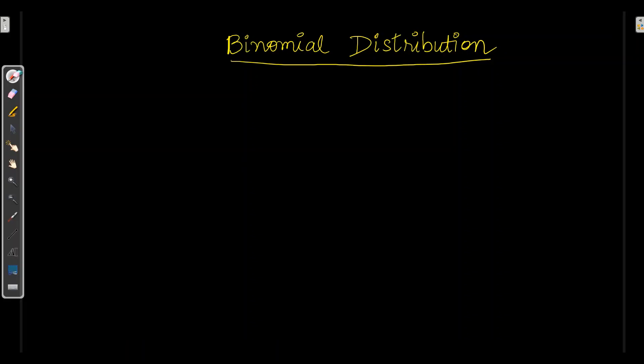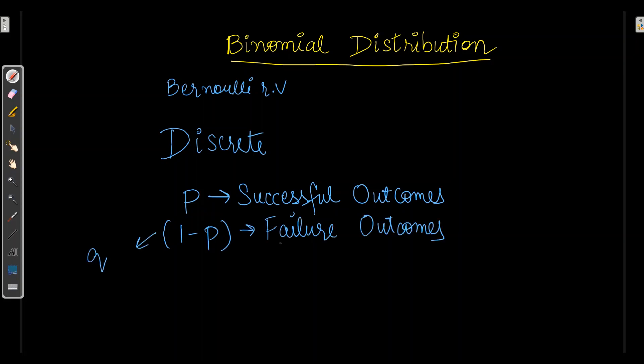Binomial random variable is related to Bernoulli random variable. It is a discrete random variable that counts how many times a particular event occurs in a fixed number of trials. When we have probability of successful outcomes as P, the probability of loss will be 1-P or we can refer it as Q. So the probability of failure outcomes will be 1-P.